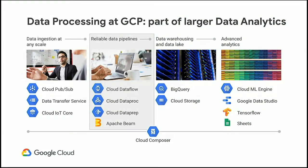Data processing in Google Cloud is part of a larger data analytics offering set. Starting with data ingestion, you have access to Cloud PubSub, which is our messaging solution for streaming events. If you need to move structured or unstructured data to Google Cloud, you can use the data transfer service. And if you need to connect your IoT devices, Cloud IoT Core is the solution for that. Once you ingest the data, you have options to process it.